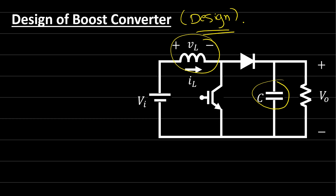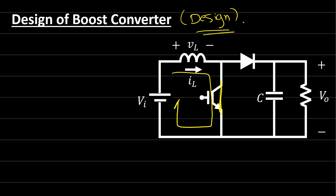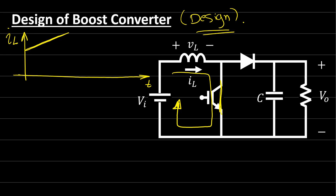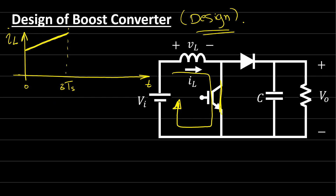If we come back to the modes of operation of the boost converter, when the active switch is conducting it will be short circuit and the current will flow in the inductor, increasing. We assume linear operation because we have a high switching frequency — one kilohertz, five kilohertz and so on — and the time from zero to ΔT_S is very small, allowing linear operation. If we decrease the switching frequency, this curve will be nonlinear and our analysis will not be accurate.